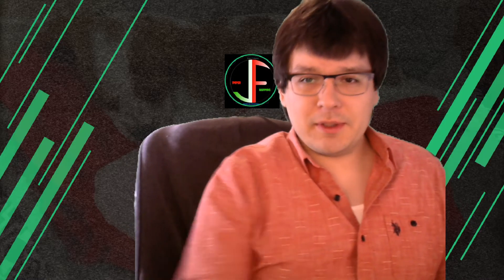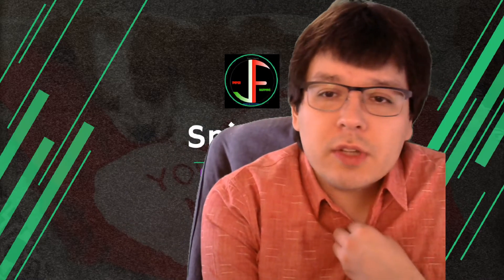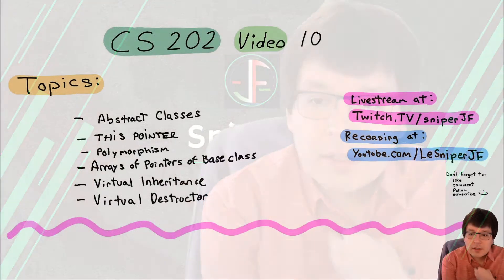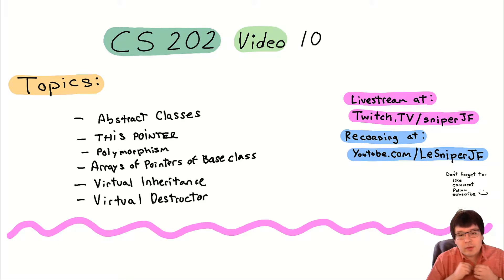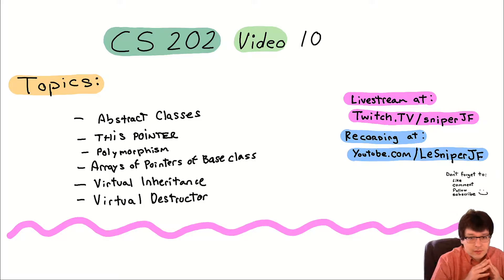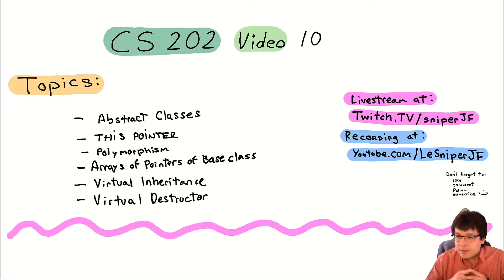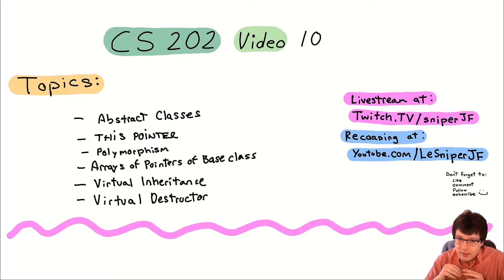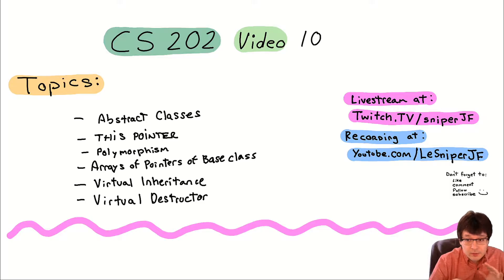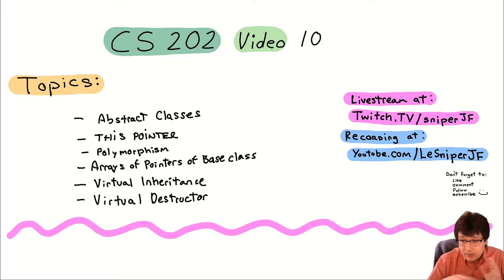Hello everybody and welcome to CS202 online. Today we're going to keep talking about virtuals — specifically abstract classes, how they're achieved with virtual functions, and interfaces in C++. I also want to cover the 'this' pointer, then show some examples of how virtuals can be very useful, including virtual destructors and virtual inheritance. If we don't get everything today, we'll finish next class.